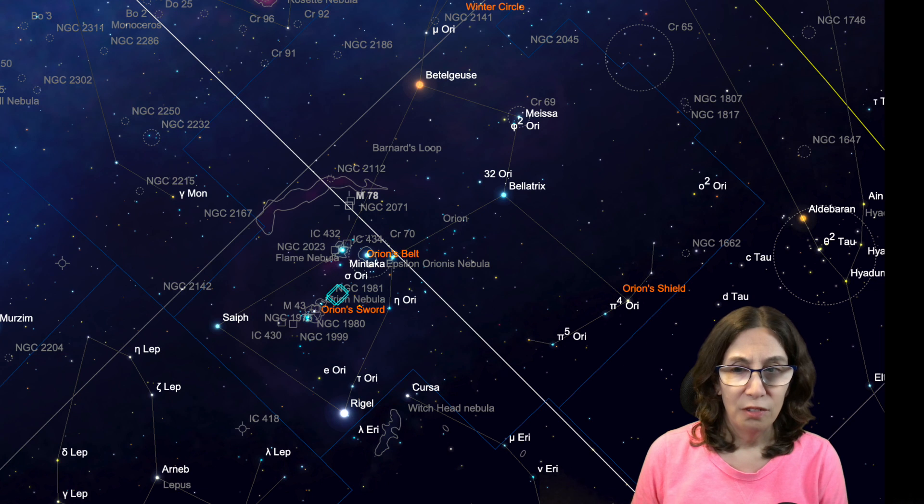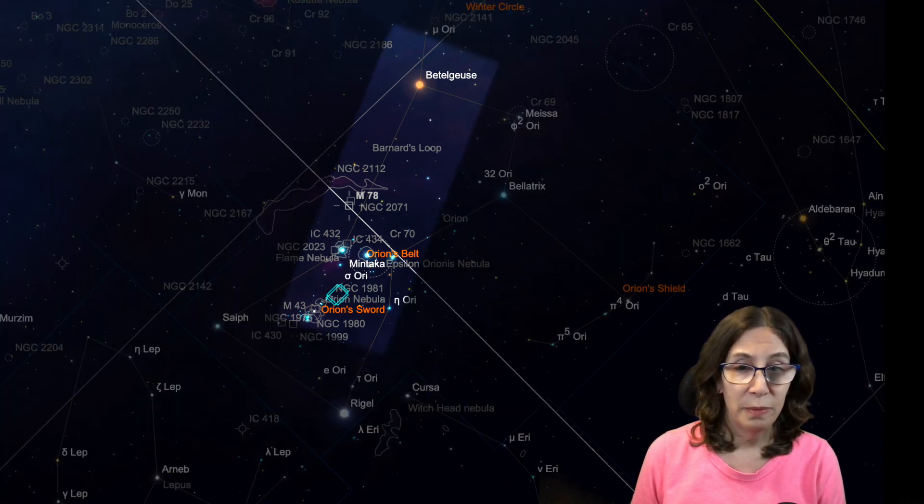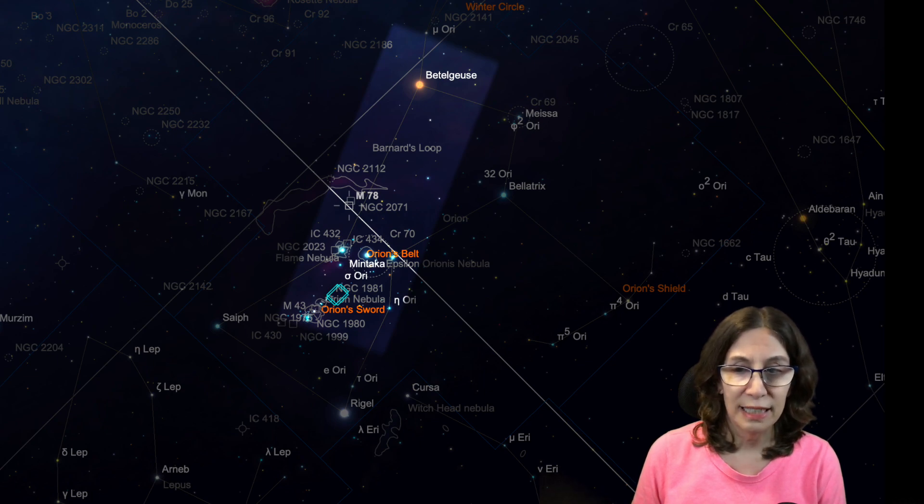So, what's all that attention for? First, let's zoom out for the bigger picture. M78 is in Orion, as we said. If you draw a line from Alnilam to Betelgeuse, M78 is about a quarter of the way up, just east of that imaginary line.